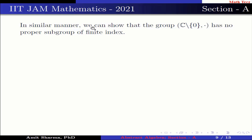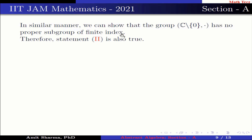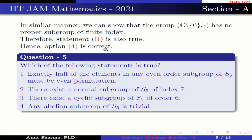In a similar manner, we can show that the group C× (non-zero complex numbers) under multiplication also has no proper subgroup of finite index. Therefore statement 2 is also true. Hence option 4 is correct.